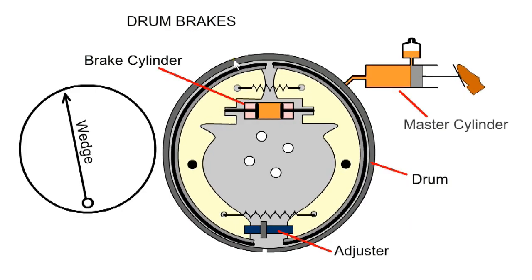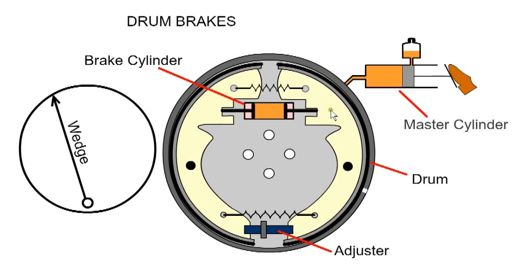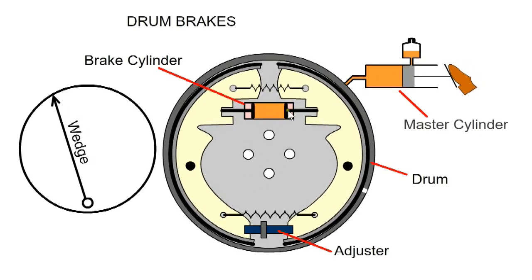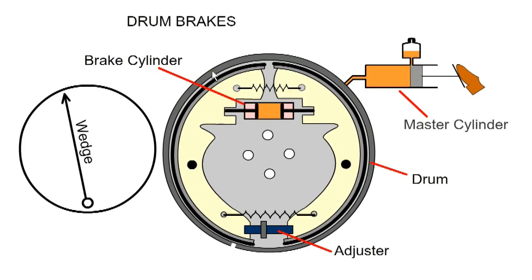Drum brakes consist of an outer drum, which the wheel is attached to, and the inner brake shoes. When the pedal is pressed, the high pressure fluid forces out the two pistons in the brake cylinder, pressing the shoes against the drum.